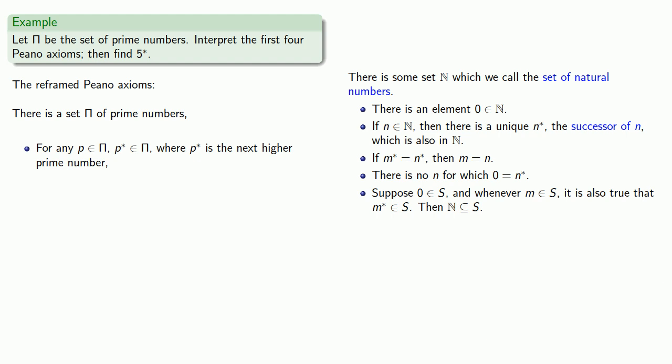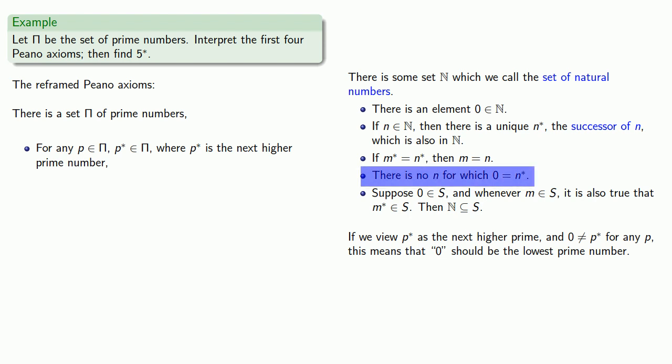Now that gives us insight on what this symbol zero should be. If we view p* as the next higher prime, and we want zero not to be p* for any p, this means that our symbol zero should be the lowest prime number. So instead of the symbol zero, we'll use the symbol two.